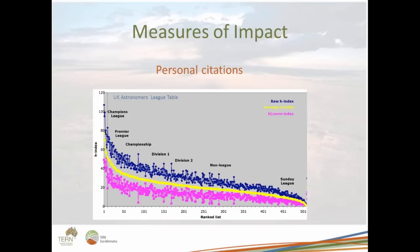Traditionally impact is measured by personal citations based on scientific paper publications. Here we have an example of personal citations measured by the H-Index, compiled as a kind of football league table for UK astronomers. As you can see, those who published a huge amount of papers are in the champion leagues, others are tapering off, and most people would fall somewhere in the middle — some not even in the league. This shows the importance of personal citations to researchers.